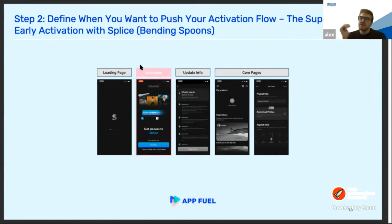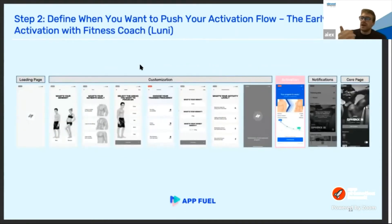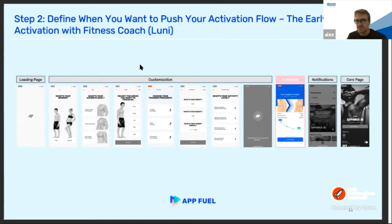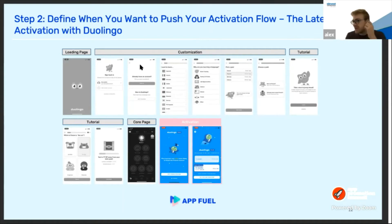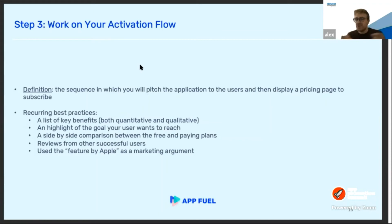Taking the example of Splice: you download the app, open it, and Splice immediately pushes you to subscribe with a weekly plan. Second example — Yuni, a fitness app: you go through the onboarding, engage with the app by customizing your experience with your information, gender, and goals, and then they push the activation flow. Last example — Duolingo: during the onboarding they don't mention activation. You get hooked, make several classes, and then discover you need to pay for special features.